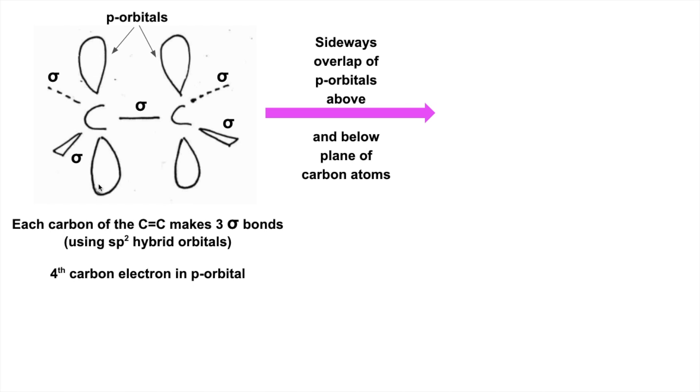These two p orbitals—remember there's an electron in each one—they overlap sideways above and below the plane of the carbon atoms, and they create a new region of space that the pair of electrons can live in.